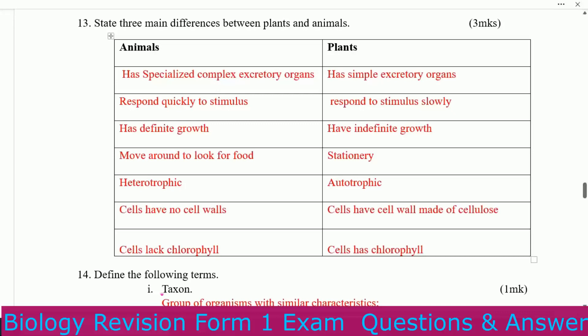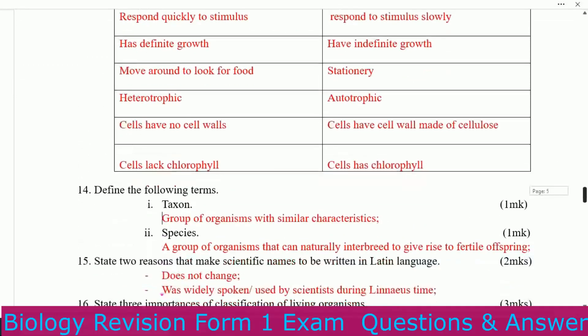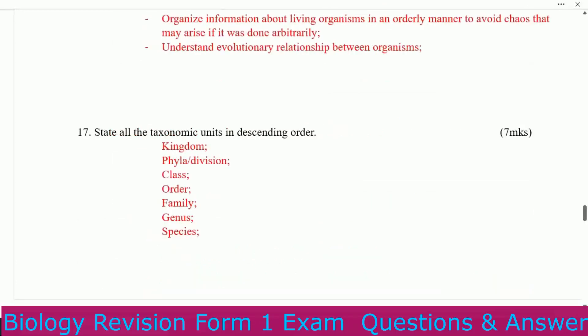Plants are autotrophic. Animal cells have no cell wall; plant cells have cell walls made of cellulose. Animal cells lack chlorophyll; plant cells have chlorophyll.